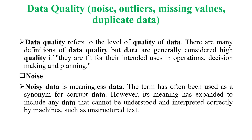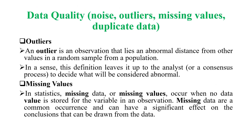All data science, analytics, and machine learning depend greatly on the data. There are certain terms we have to identify to improve the quality of the data. First is noise. Noisy data is meaningless data — the term has often been used as a synonym for corrupt data. Its meaning has expanded to include any data that cannot be understood and interpreted correctly by machines, such as unstructured text. So noise is data that is not suitable or not in sync with expectations.